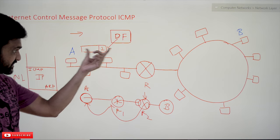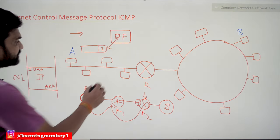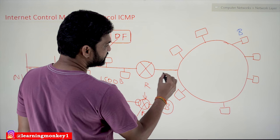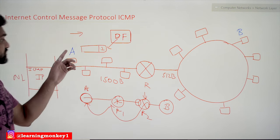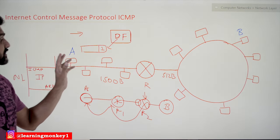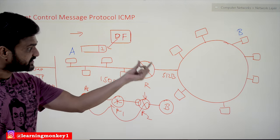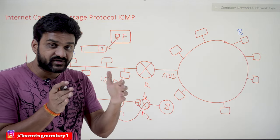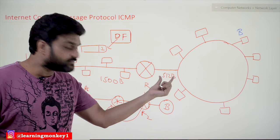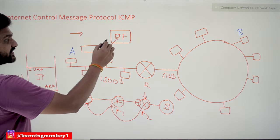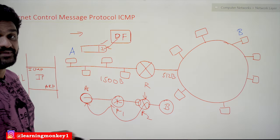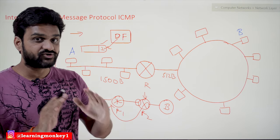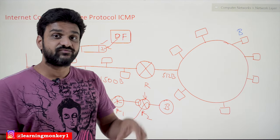For example, if this Ethernet network has a capacity of 1500 bytes and the next network has a capacity of 512 bytes, in order to send data from A to B, the 1500-byte packet reaches the router. The router has to break that 1500-byte packet into smaller 512-byte pieces. But since the DF bit is set to 1 in the IPv4 header, the router does not have the right to fragment the packet.